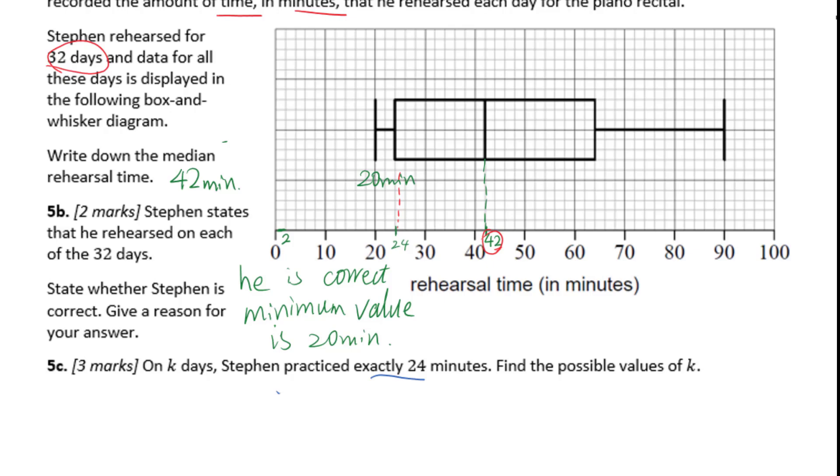Let's go to 5C. On K days, Stephen practiced exactly 24 minutes. Find the possible values of K. 24 minutes is the first quartile in this whisker plot diagram. We know all the data here is 32. 32 plus 1 over 2, that's the entry for median. It's 16.5.